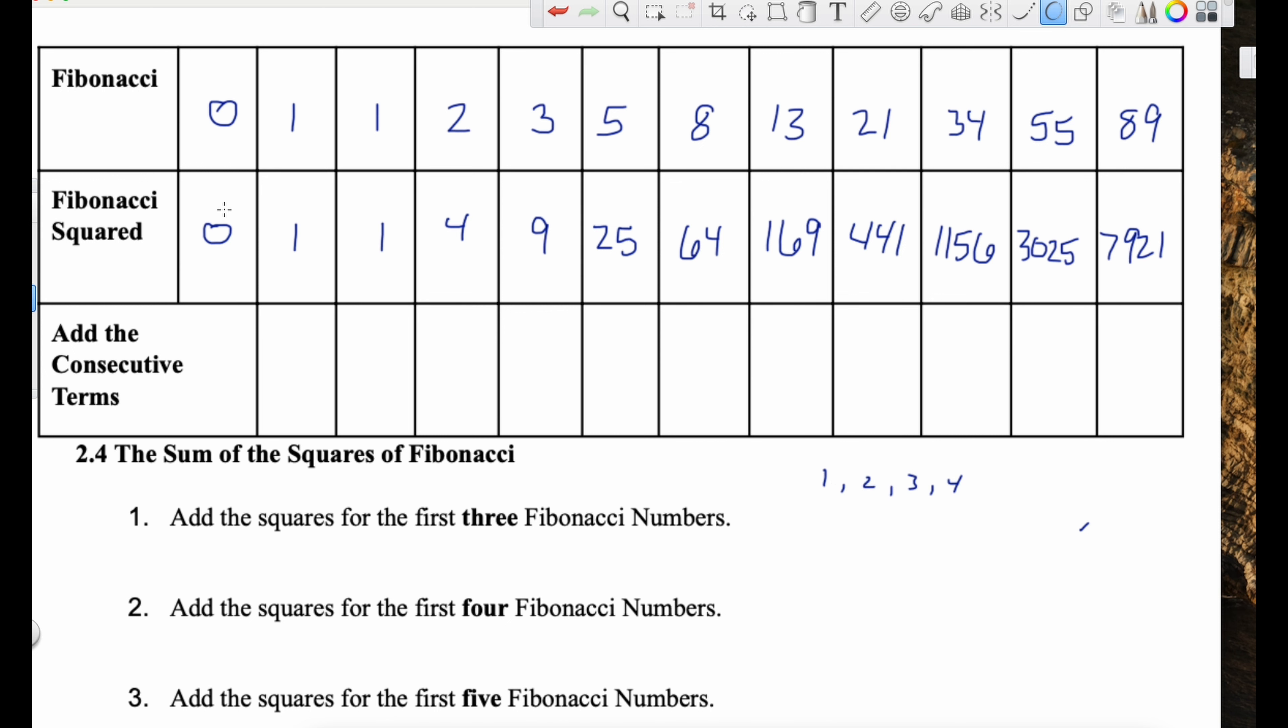Now I want to square these numbers. So 0 squared is 0, we've got 1, 1. So 2 squared, 4, 3 squared, 9, 5 squared, 25, 64, 13 squared, 169. That's about the end of my squaring facts there.